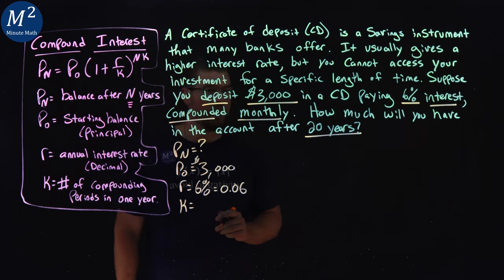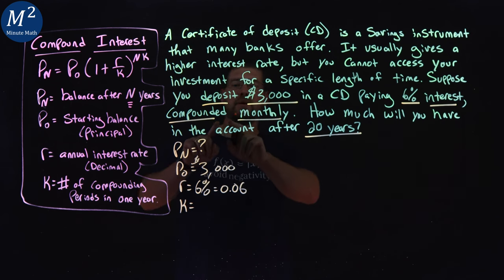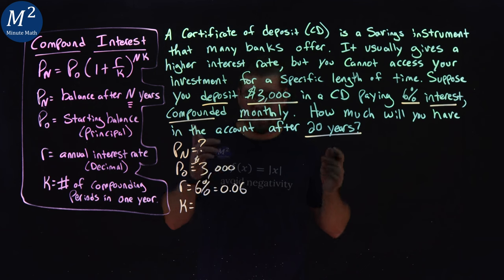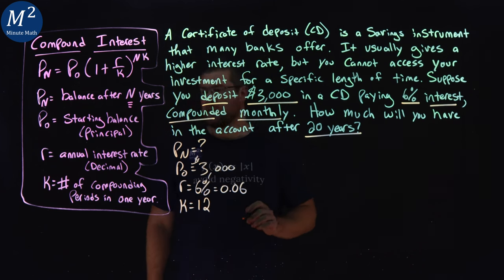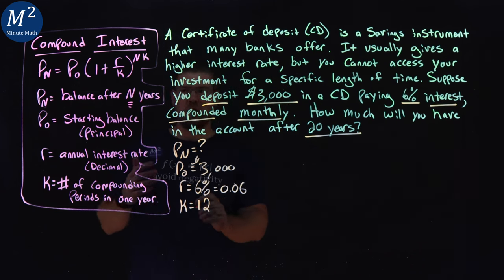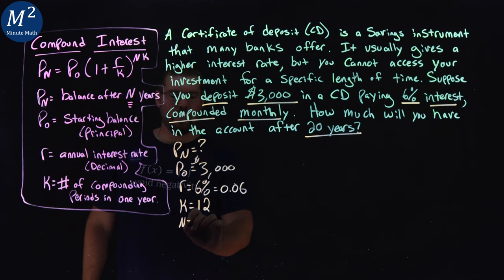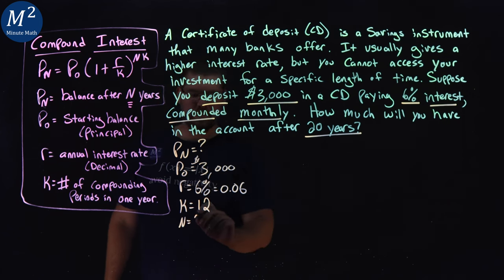The number of compounding periods. Well, it's compounded monthly, so there's 12 months in a year, so that's going to be a 12. And then we have our n, number of years, 20.